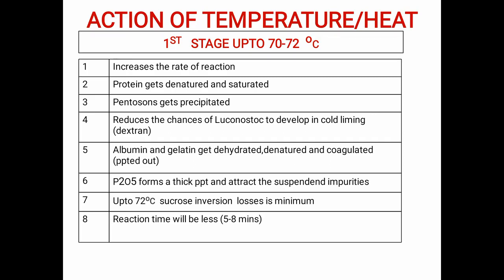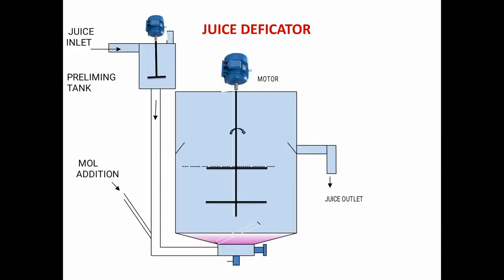Fifth, albumin and gelatin get denatured and coagulated. Sixth, P2O5 (phosphoric pentoxide) forms a thick precipitate and adsorbs the suspended impurities up to this temperature — the precipitation of phosphoric pentoxide is very good and it adsorbs whatever impurities are suspended. Most importantly, sucrose inversion loss is minimum at 72 degrees Celsius, and the reaction time is lesser as the reaction happens faster at that temperature.